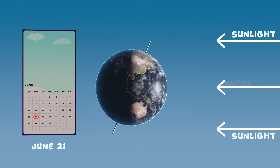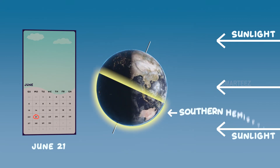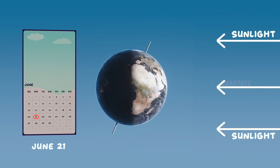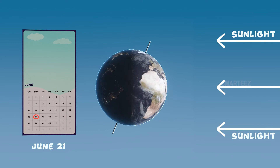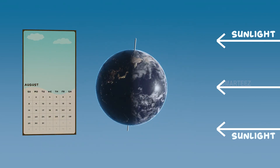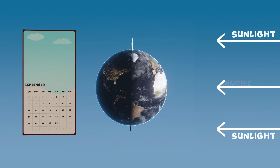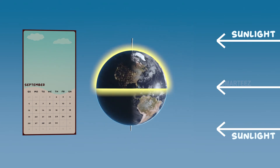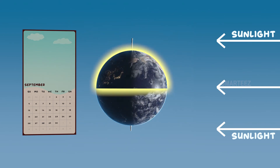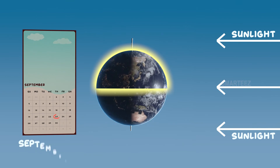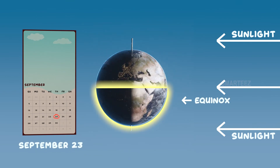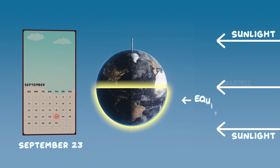You are right, Mr. Hopster! Thank you! Southern hemisphere experiences winter during this time. Now let's see the earth revolve again! We now see how the sun's light falls equally on the two halves of the earth on September 23rd — this is the second equinox of the year.